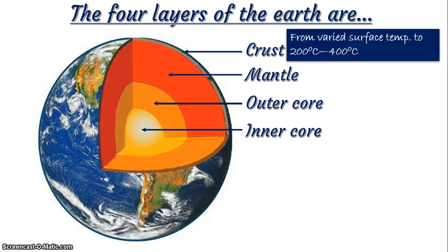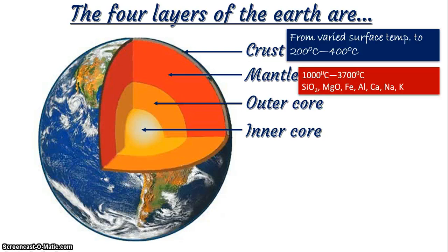How about the mantle? The mantle is quite, quite hot. It ranges from 1,000 degrees Celsius to 3,700 degrees Celsius — unbelievable! And what are some of the minerals we have in the mantle? The mantle has such minerals as silicates, magnesium oxide, iron, aluminium, calcium, sodium, and potassium.